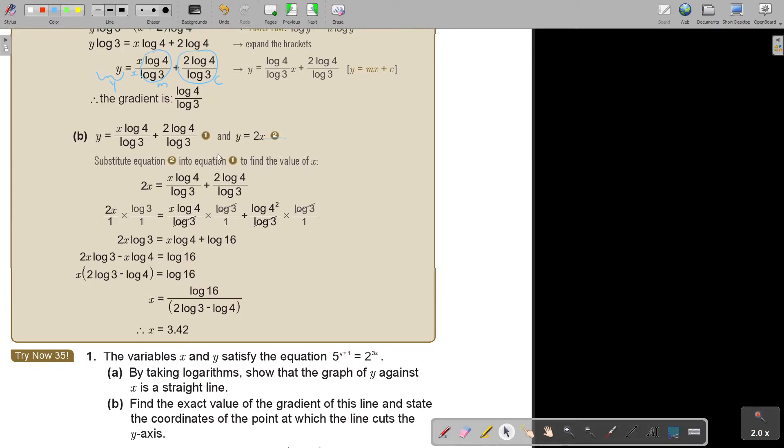So basically, I'm just going to substitute equation 2 into equation 1. So every time I see a y, in a place of y, I'm going to put 2x. That's what I did there. Then I'm basically just going to simplify. I'm actually just sitting with log 3, so I multiply with the LCM, log 3, log 3, log 3.